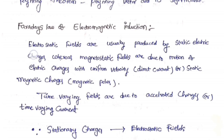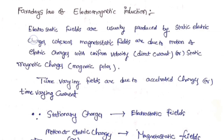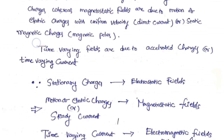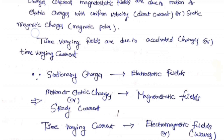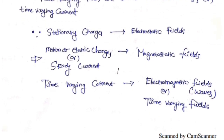Time varying fields are due to accelerated charges or time varying current. Time varying current means accelerated charges. Stationary charges produce electrostatic fields. Motion of electric charges, or steady current, produces magnetostatic fields.